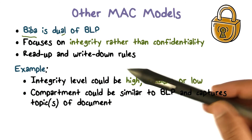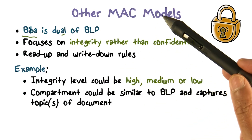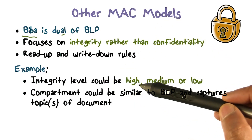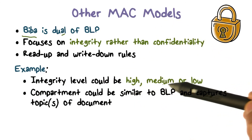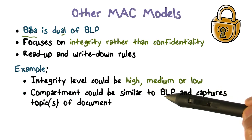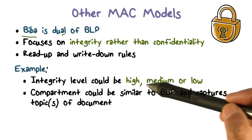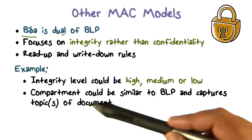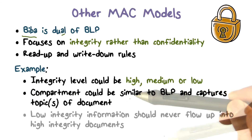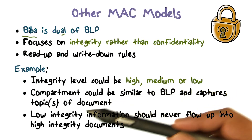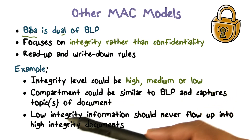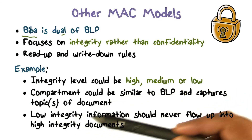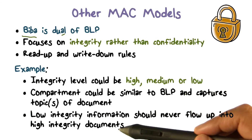The label — anytime I talk about a model I want to discuss what the label looks like. High, medium, low is ordered again — totally ordered. Compartments are partially ordered because they are sets. And the model says low-integrity information should never flow into high-integrity documents.